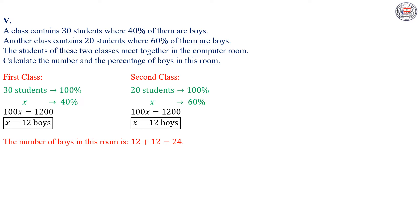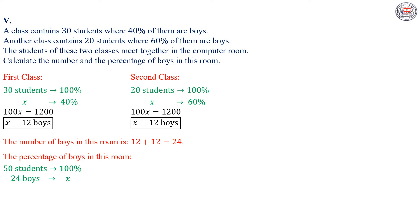Now we need to find the percentage of boys in this room. The total number of students in this room is 50. Then 50 students is 100%. We have 24 boys, they constitute x%. If we need to find x, then we have to make a cross multiplication and we get 50x equals 2400, then x equals 48%.